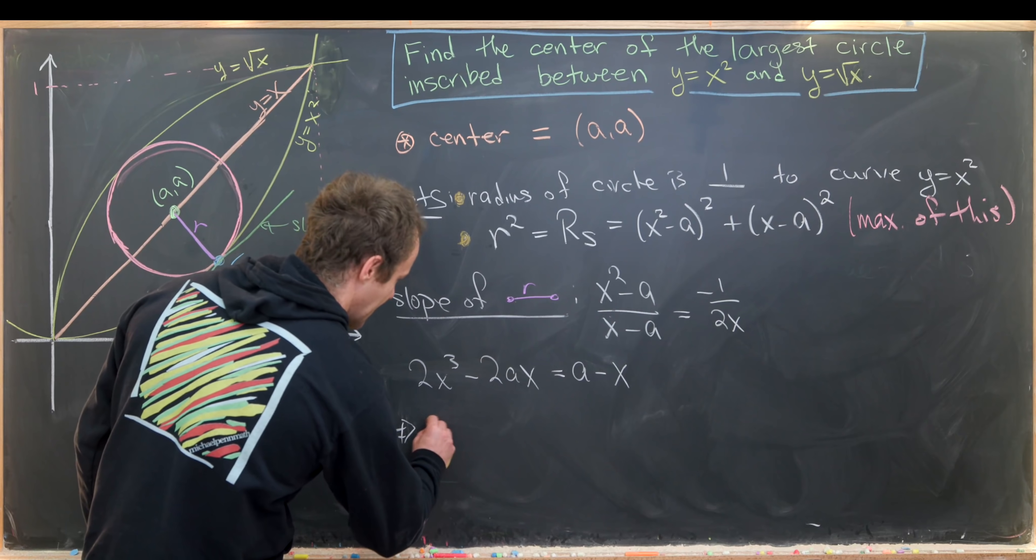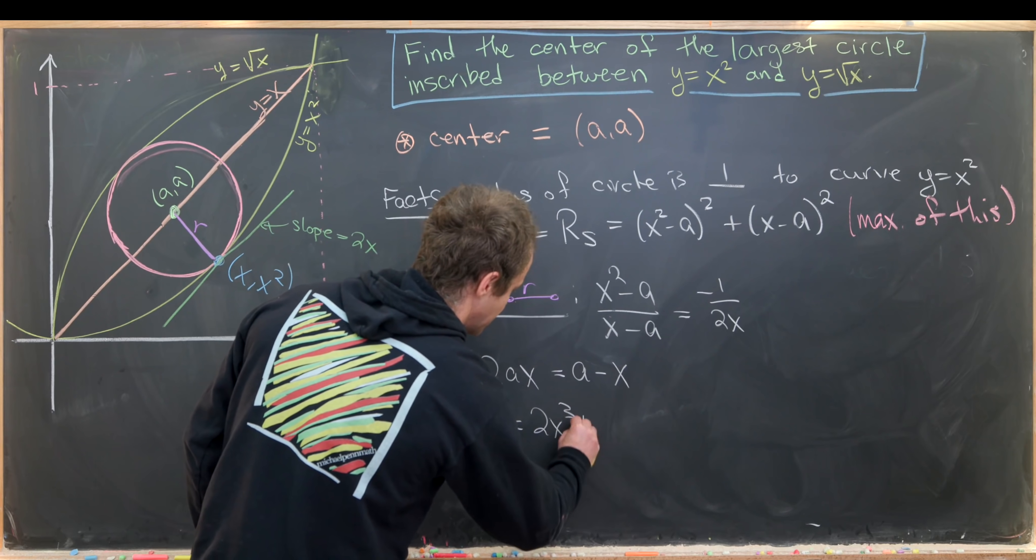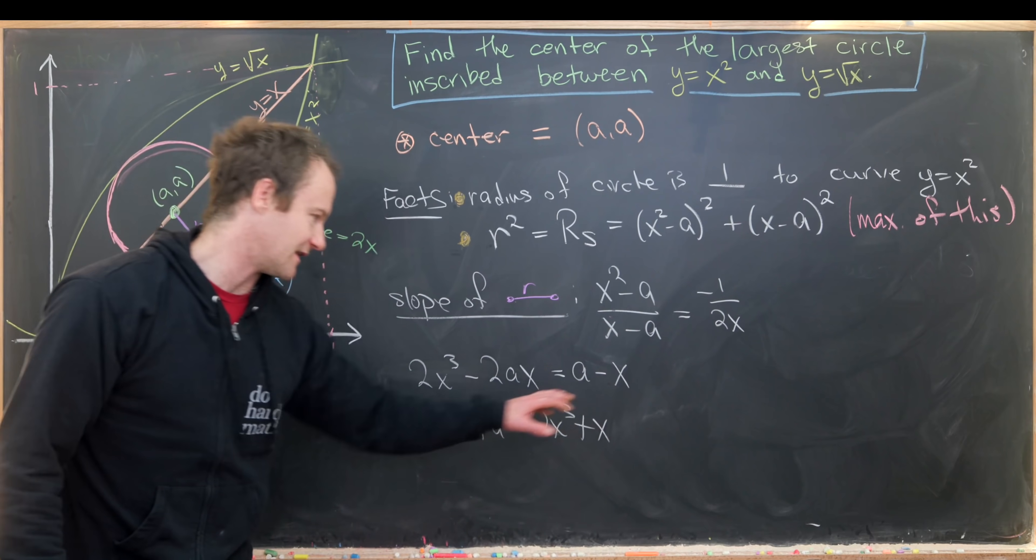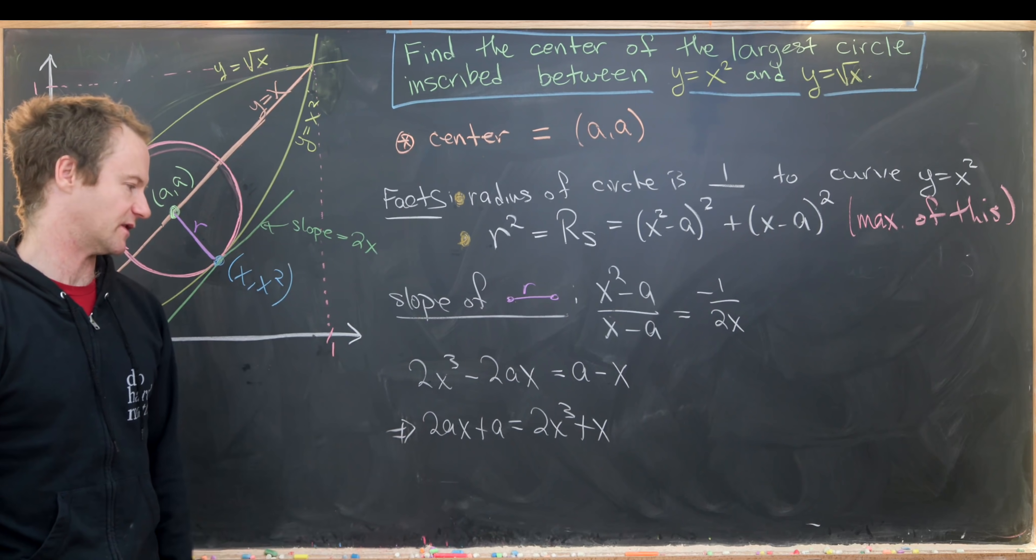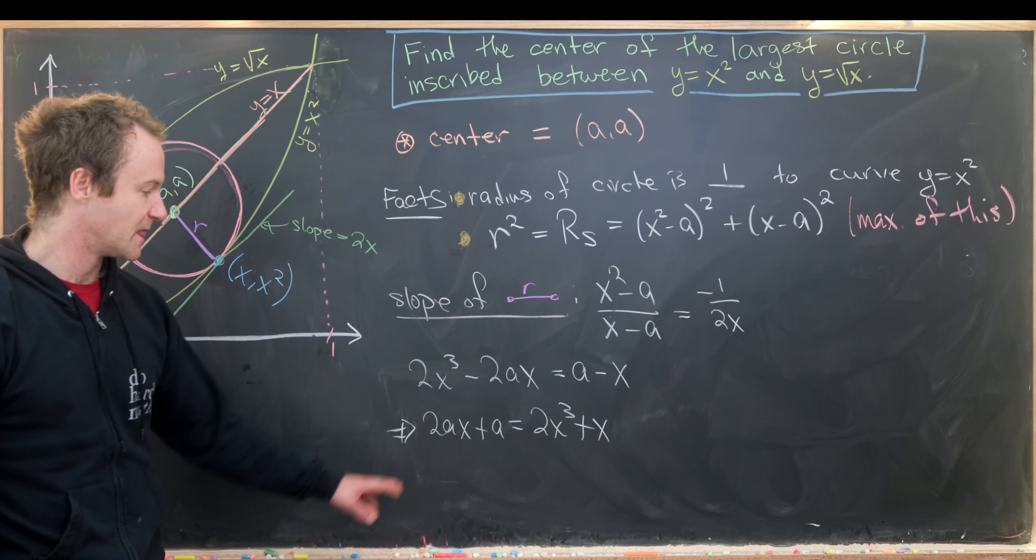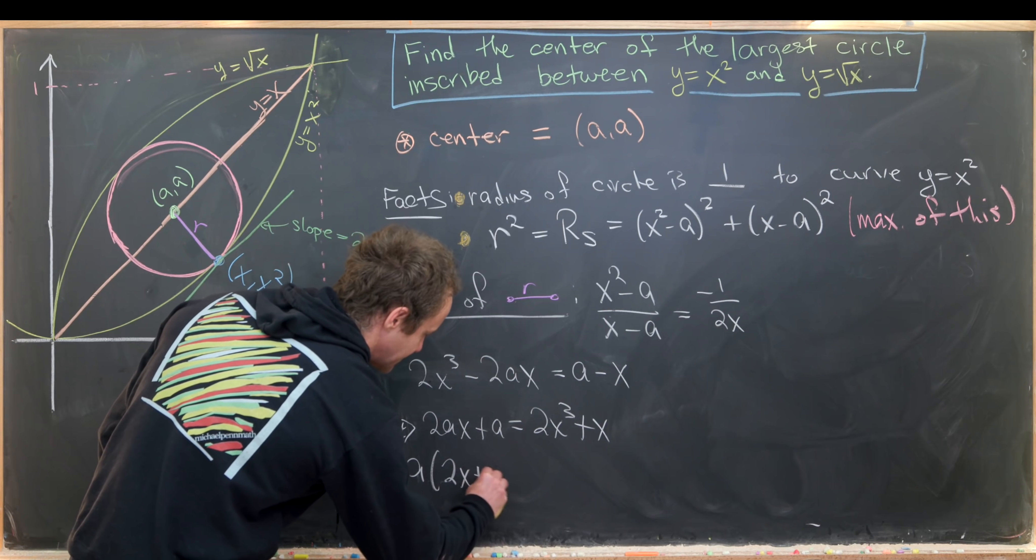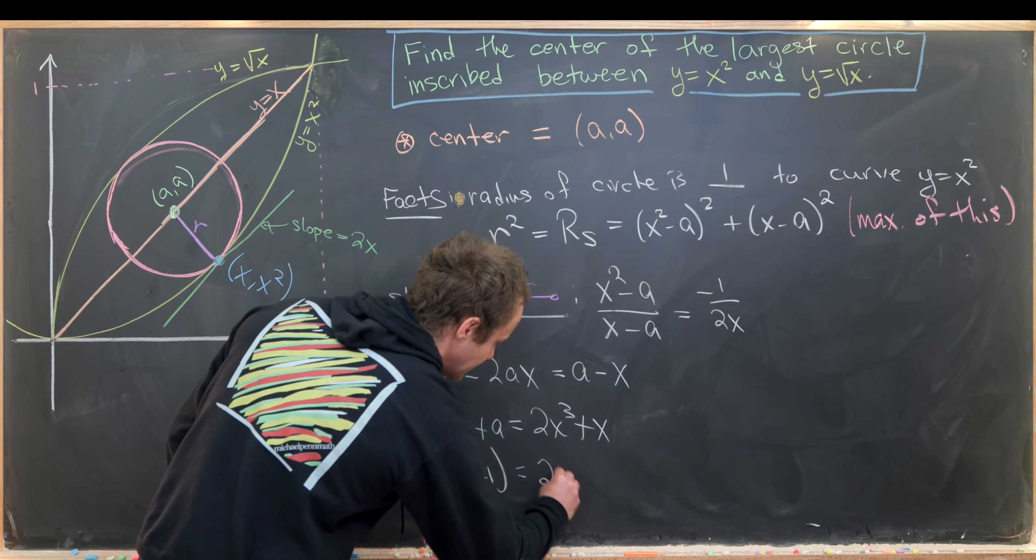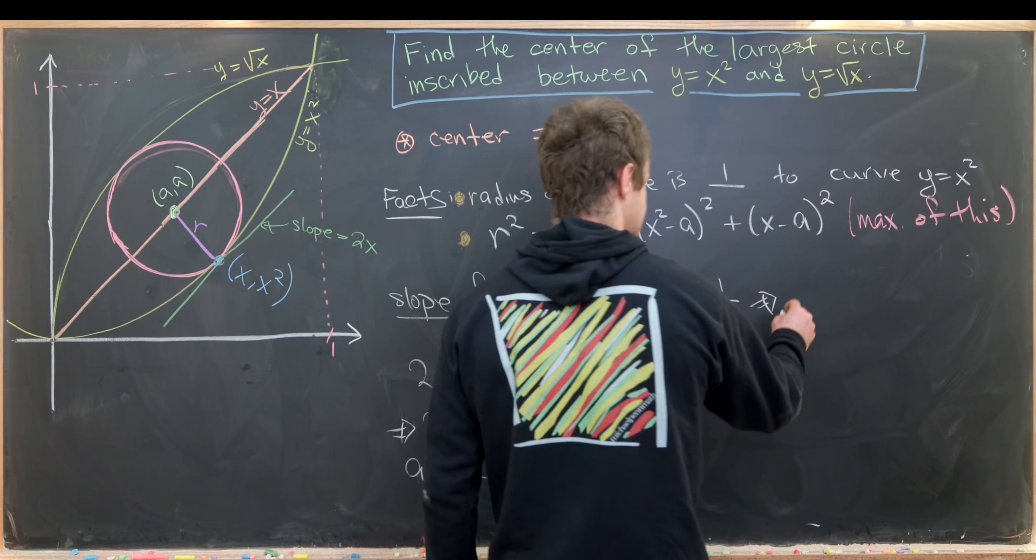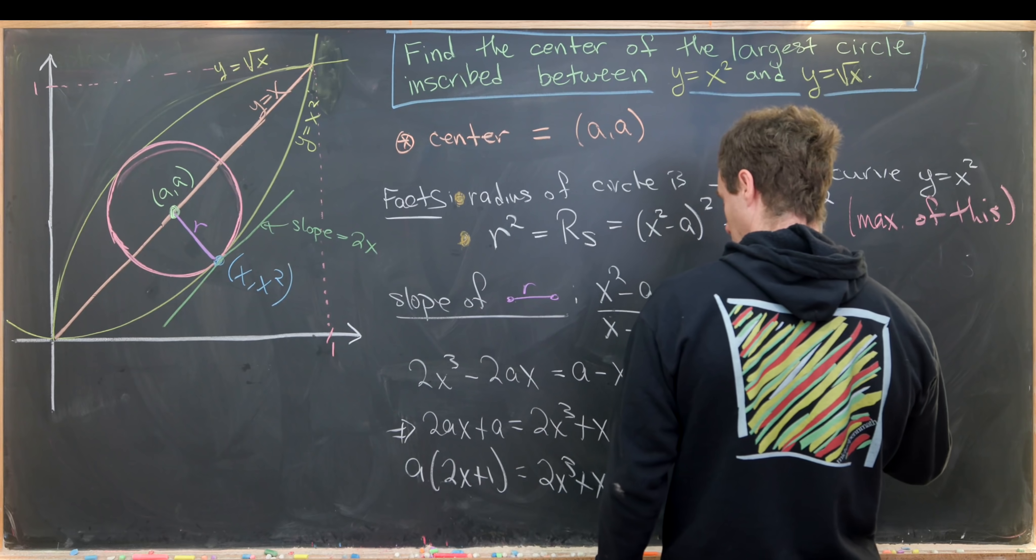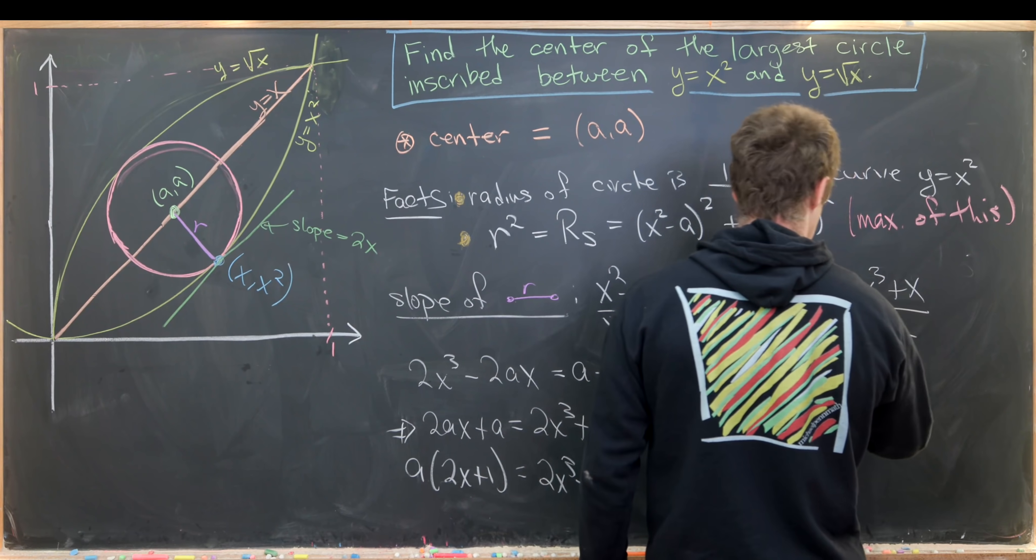That gives me 2ax plus a equals 2x cubed plus x. Now I can factor an a out: a times 2x plus 1 equals 2x cubed plus x. So a equals 2x cubed plus x over 2x plus 1.